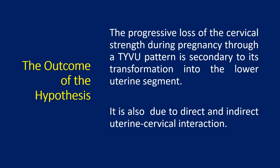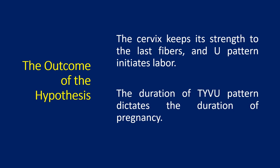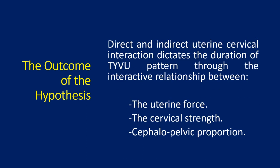The outcome of the hypothesis: the progressive loss of cervical strength during pregnancy through a T-Y-V-U pattern is secondary to its transformation into the lower uterine segment. It is also due to direct and indirect uterine-cervical interaction. The cervix keeps its strength to the last fibers, and the U-pattern initiates labor. The duration of the T-Y-V-U pattern dictates the duration of pregnancy. Direct and indirect uterine-cervical interaction dictates the duration of the T-Y-V-U pattern through the interactive relationship between uterine force, cervical strength, and cephalopelvic proportion.